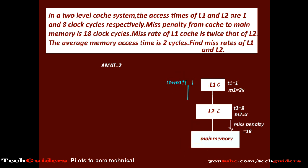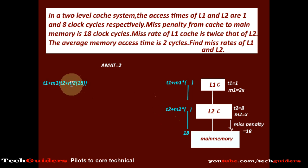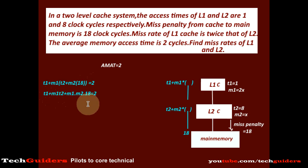The miss penalty of the lower level is T2 plus M2 times the miss penalty to the next level, which is 18. So the full equation is T1 plus M1 times (T2 plus M2 times 18) equals 2. Distributing: T1 plus M1·T2 plus M1·M2·18 equals 2.